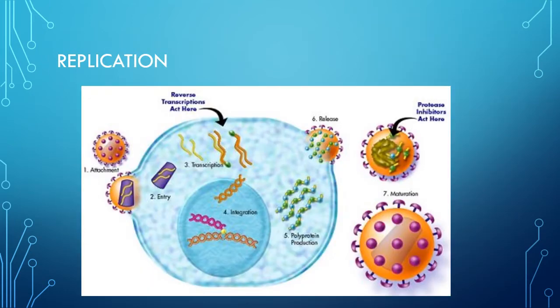In replication, the first step is attachment using the main receptor and co-receptor. After attachment, fusion of HIV to the host cell takes place, mediated by gp41. Then penetration and uncoating: after fusion, the HIV nucleocapsid enters the host cell cytoplasm, followed by uncoating and release of two copies of single-stranded RNA and viral enzymes. The next step is reverse transcription: viral reverse transcriptase mediates transcription of single-stranded RNA into single-stranded DNA, forming a DNA-RNA hybrid. The RNA is degraded by viral endonuclease and the single-stranded DNA replicates to form double-stranded DNA, which is transcribed to form viral protein components.